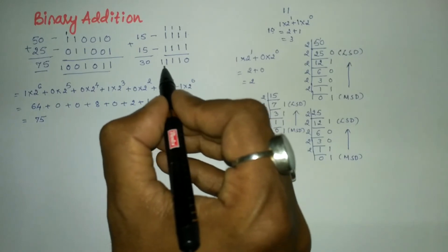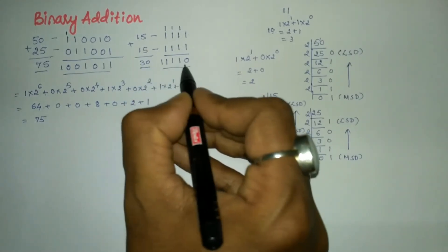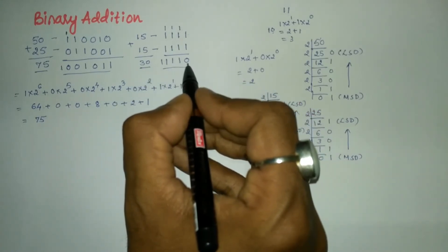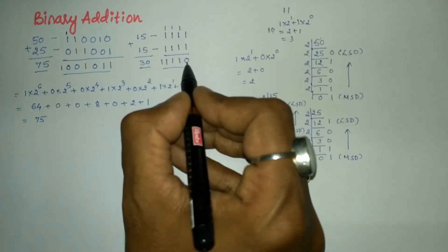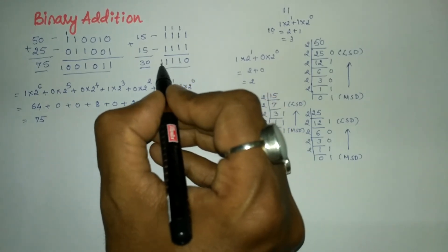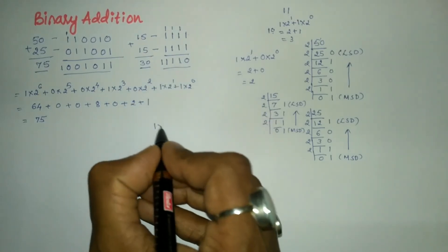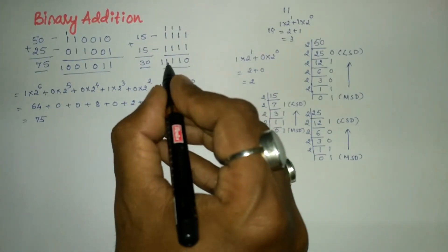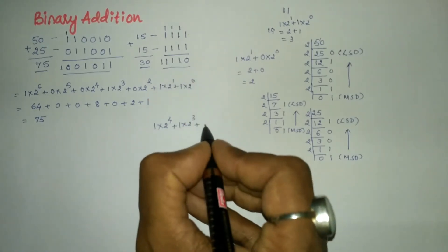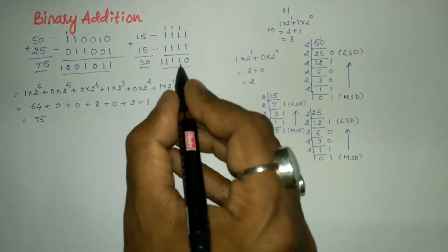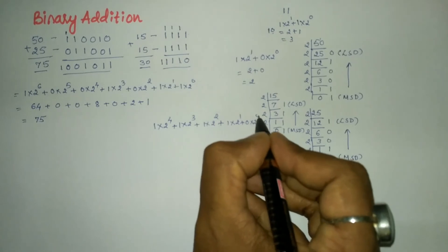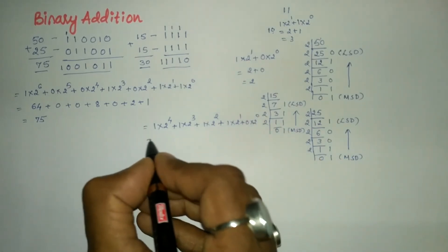Now let us verify that this binary result equals 30. Counting the positional weights from the right, positions go from 0 to 4. We write: 1 into 2 to the power 4, plus 1 into 2 to the power 3, plus 1 into 2 to the power 2, plus 1 into 2 to the power 1, plus 0 into 2 to the power 0.